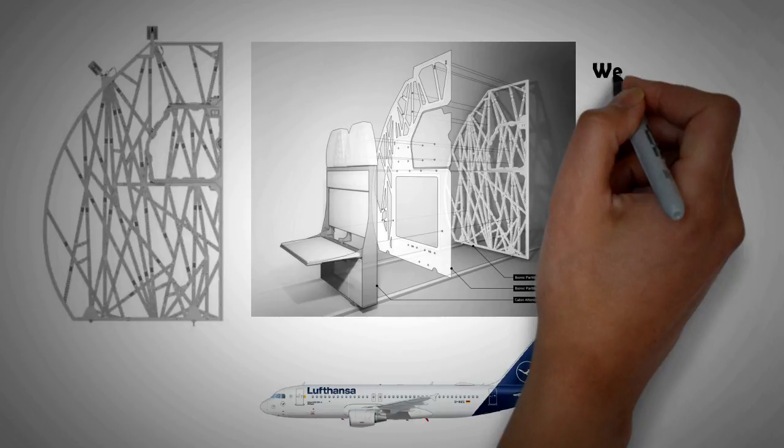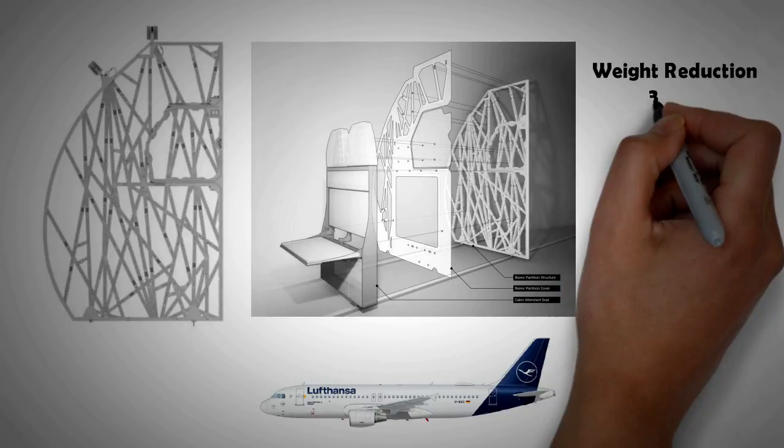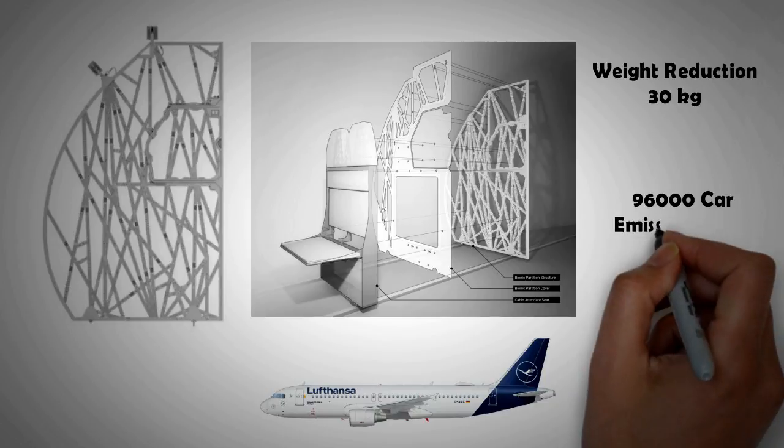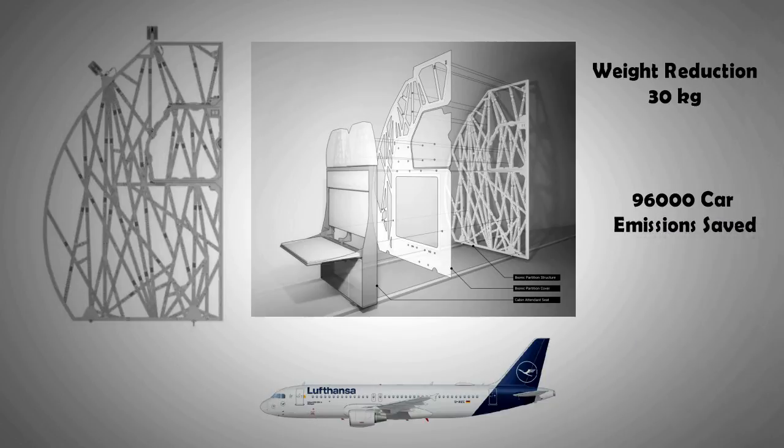That weight decrease will result in a massive reduction of jet fuel consumed and a reduction of hundreds of thousands of tons of carbon dioxide emitted when applied across its fleet of planes. Equal to taking 96,000 passenger cars off the road for a year.